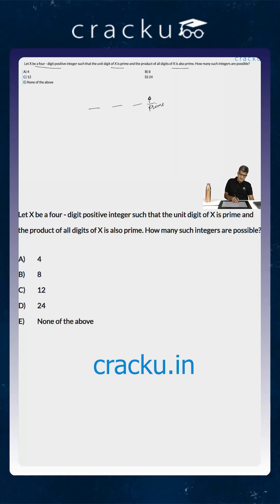How can that be? Because a prime number has only two factors: 1 and the prime number itself. Now if the first digit is a, the second digit is b, and the third digit is c, and say the prime number is p, the product of all four integers will be a, b, c, and p.